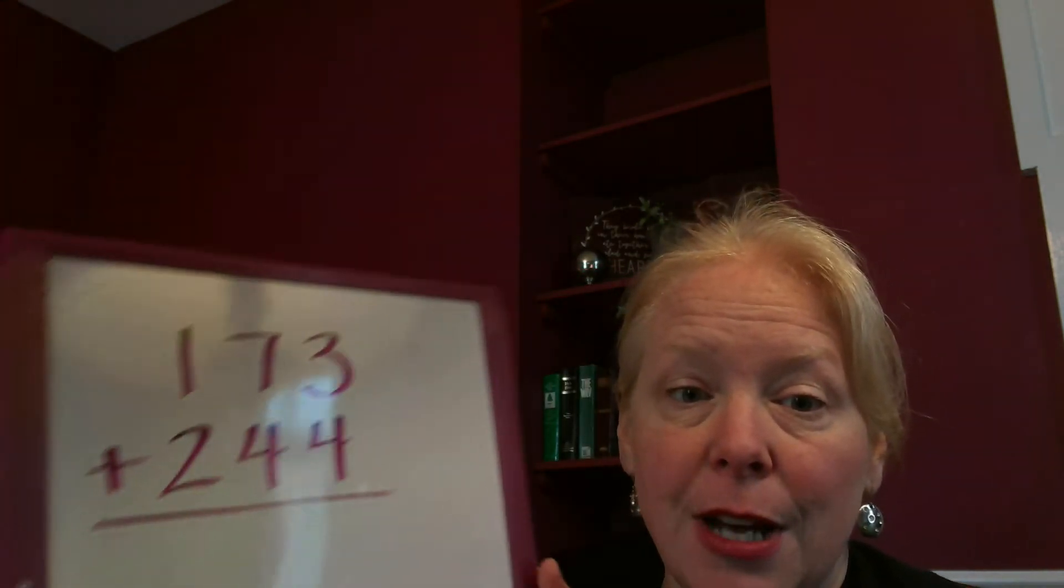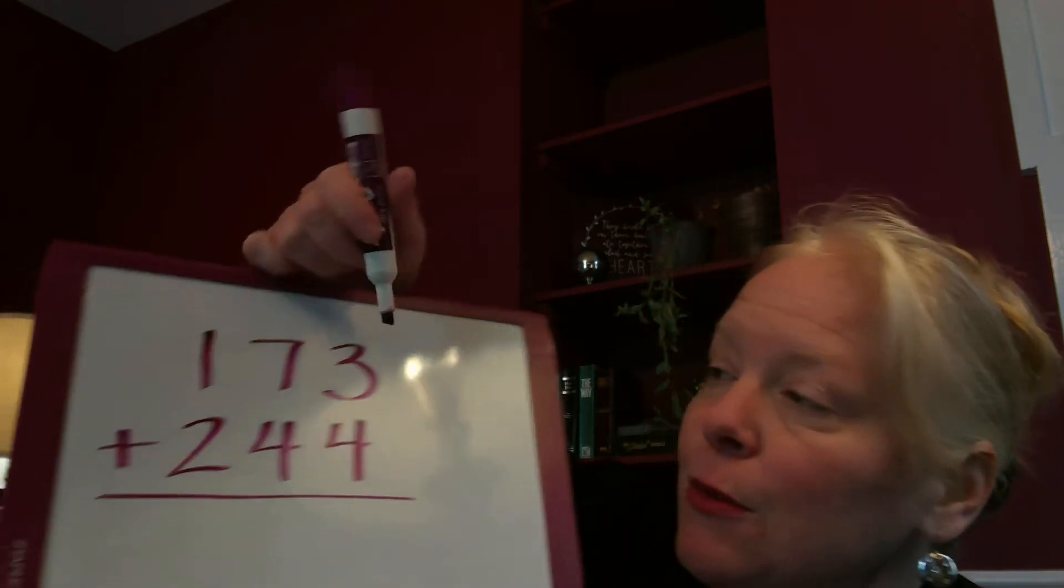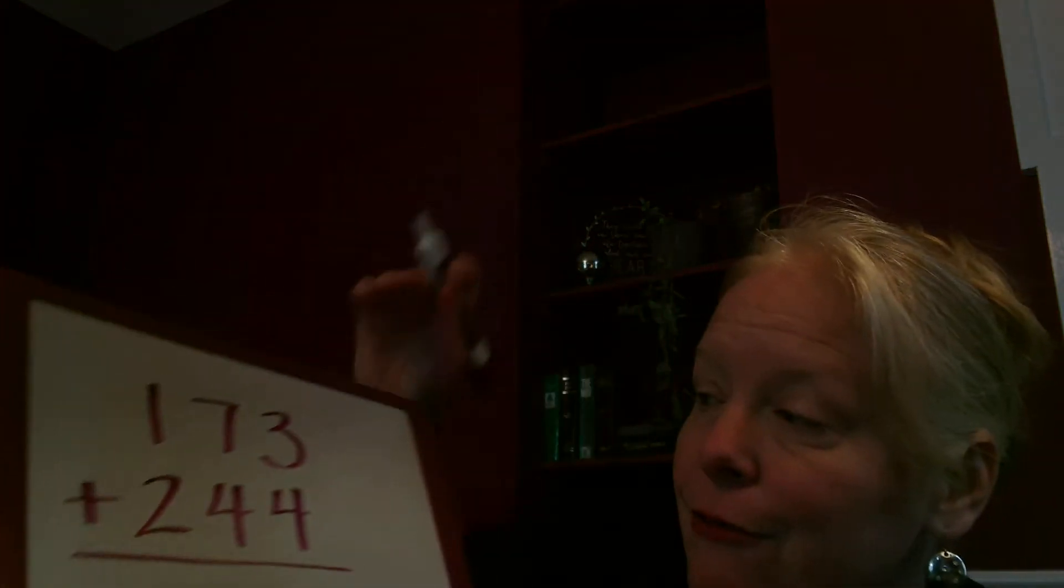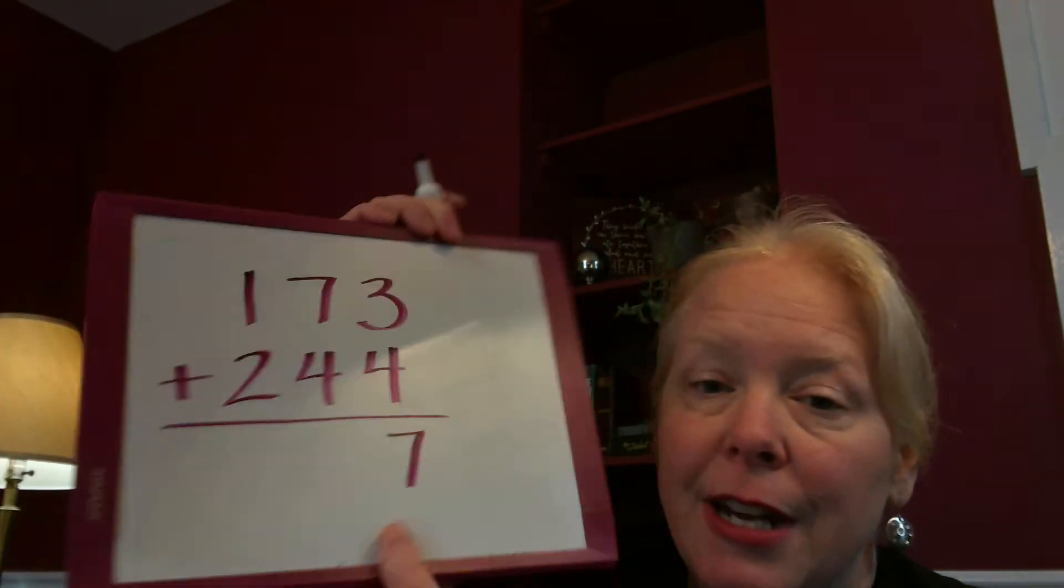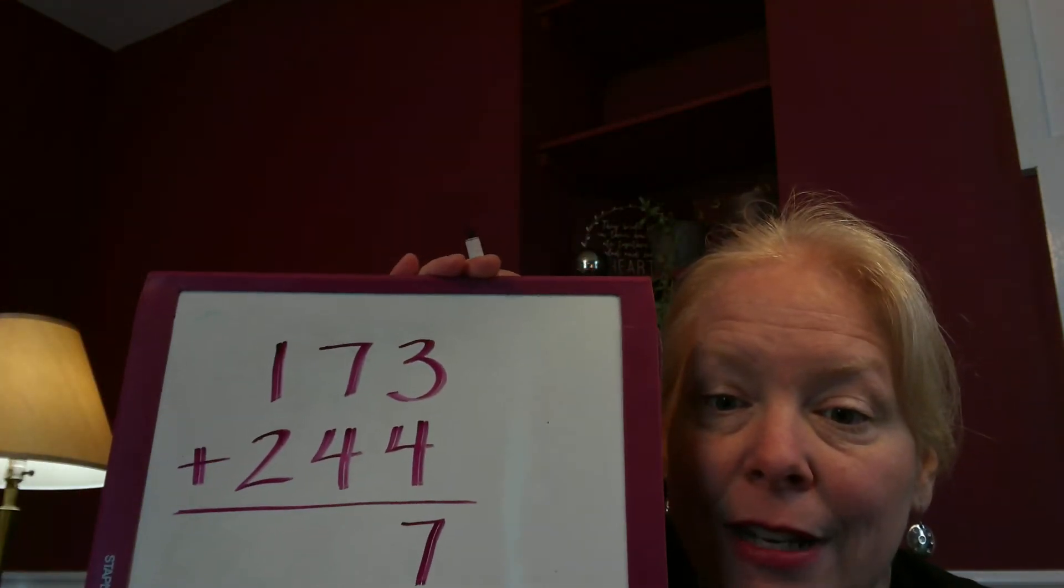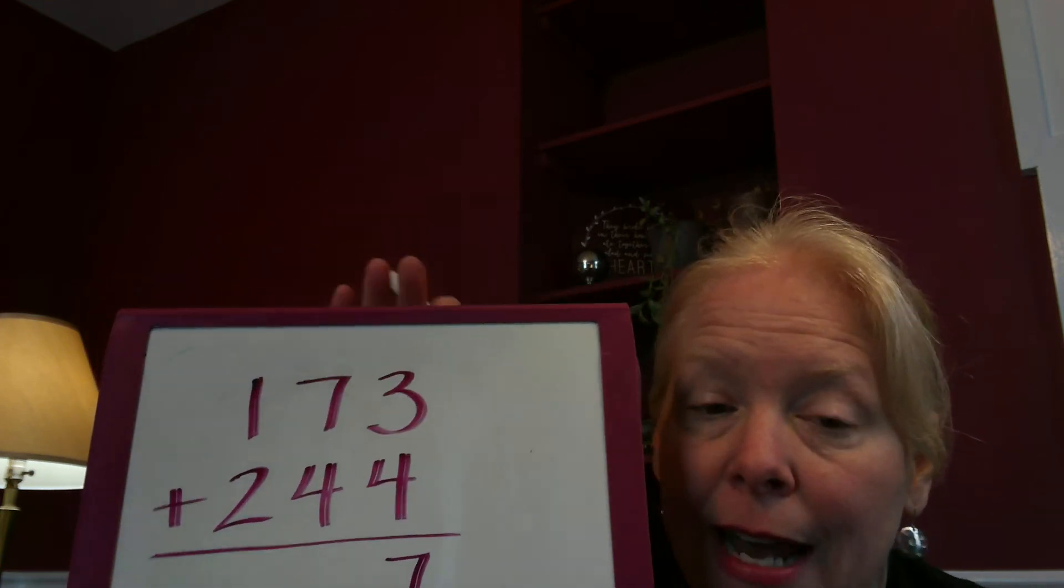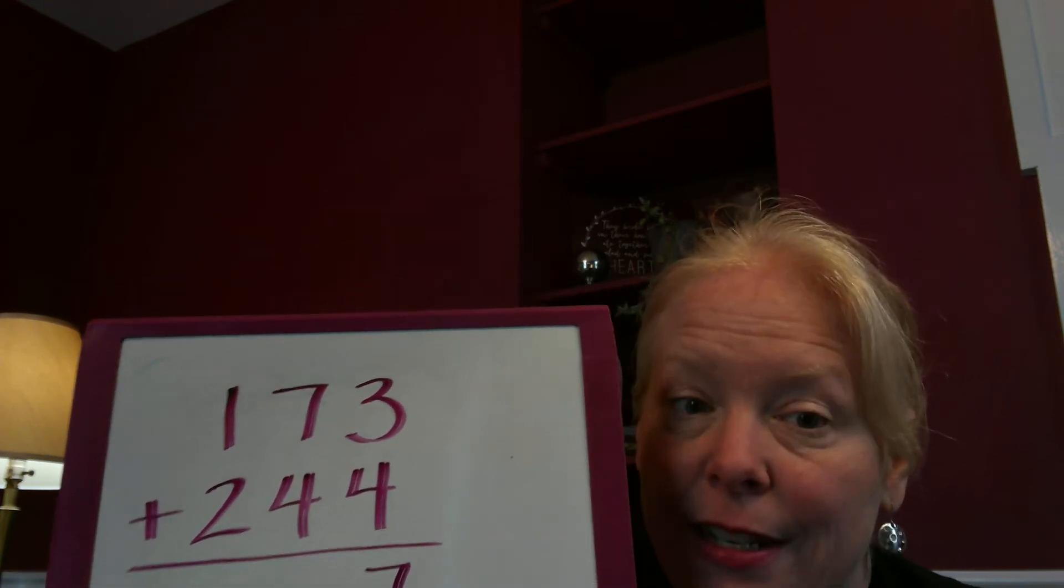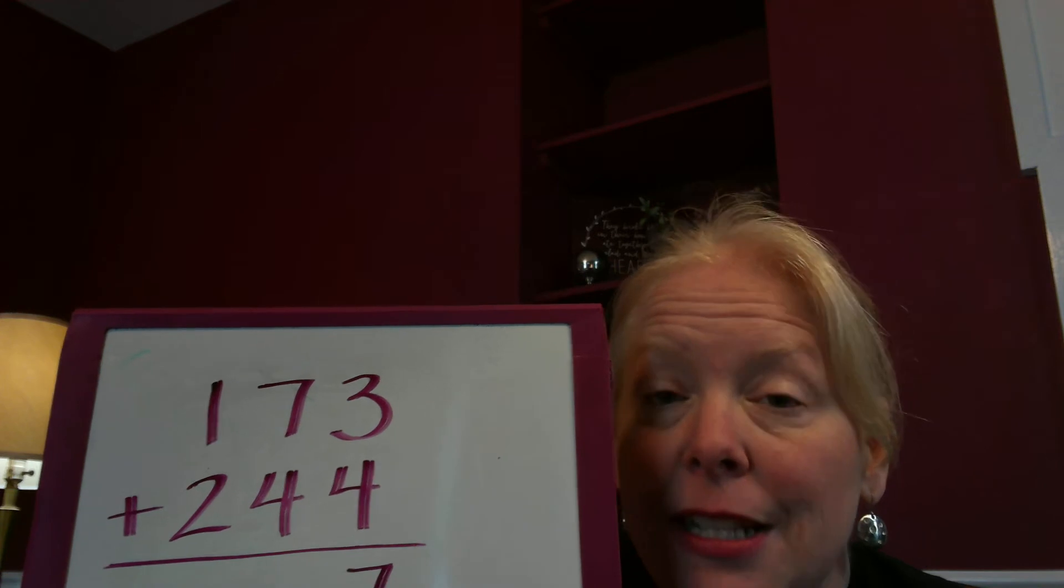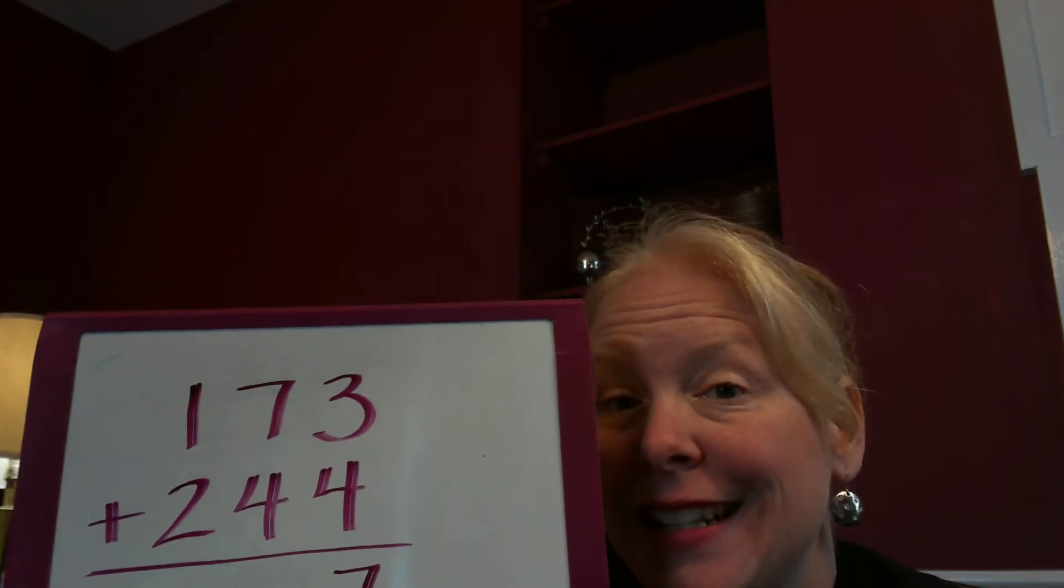When you are adding these two numbers, you need to start with the ones. So we're gonna start over here: three and four is seven, so I'm gonna write my number right underneath it. Seven plus four, now we're gonna add our tens, is eleven. Now eleven, you'll notice, is bigger than ten. Anything that's bigger than nine, we have to regroup.